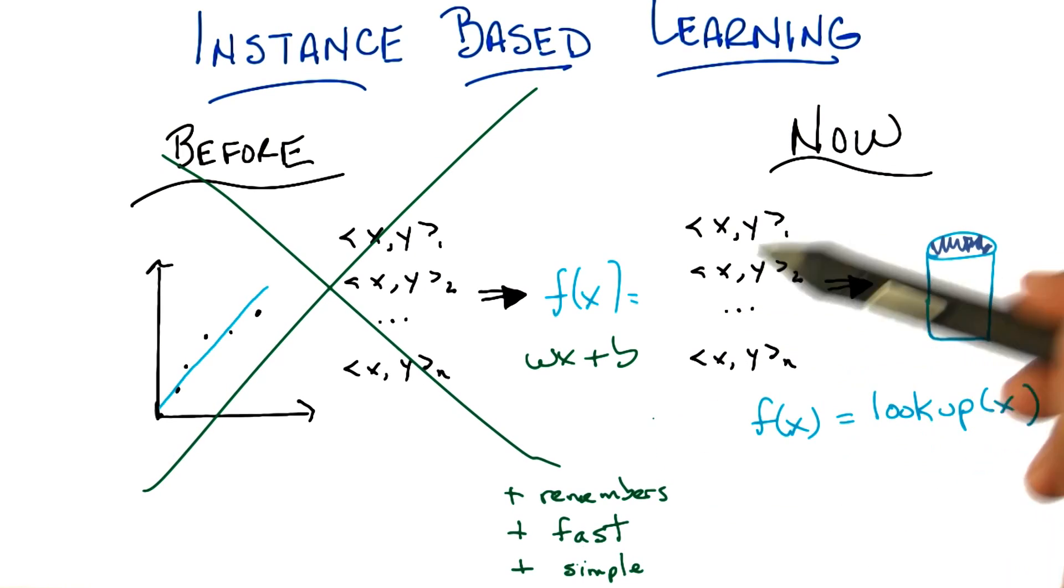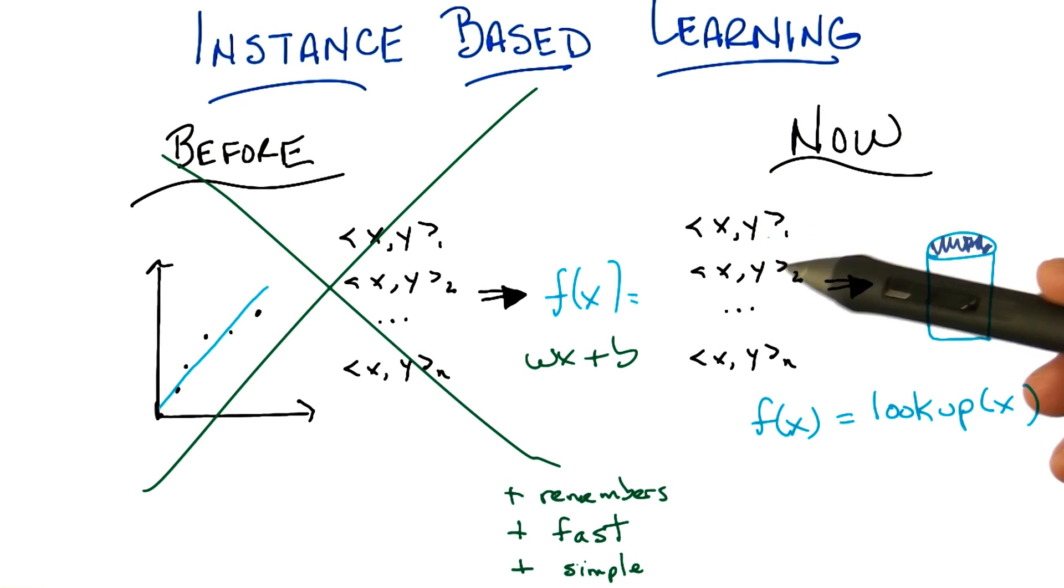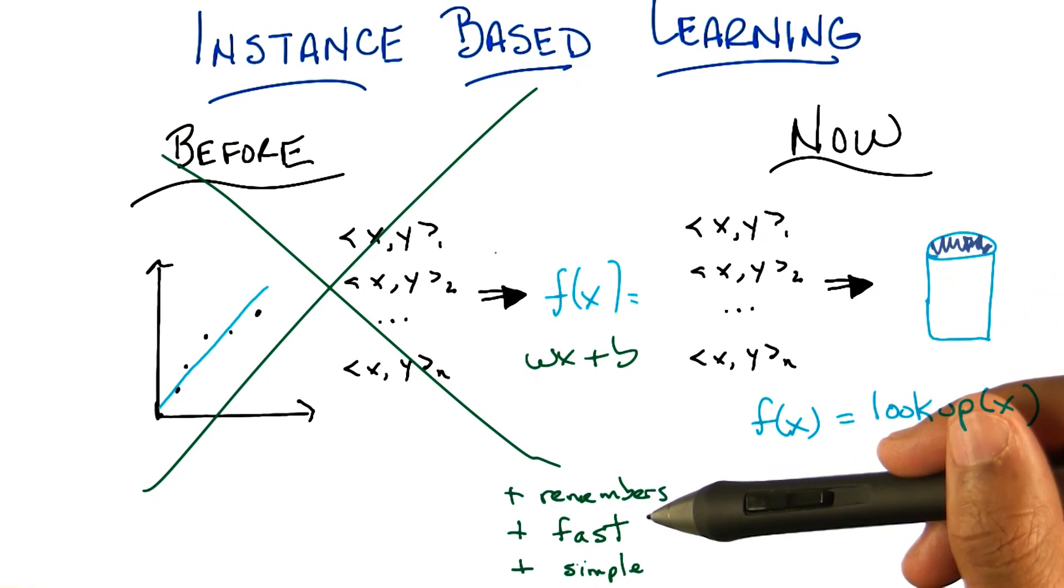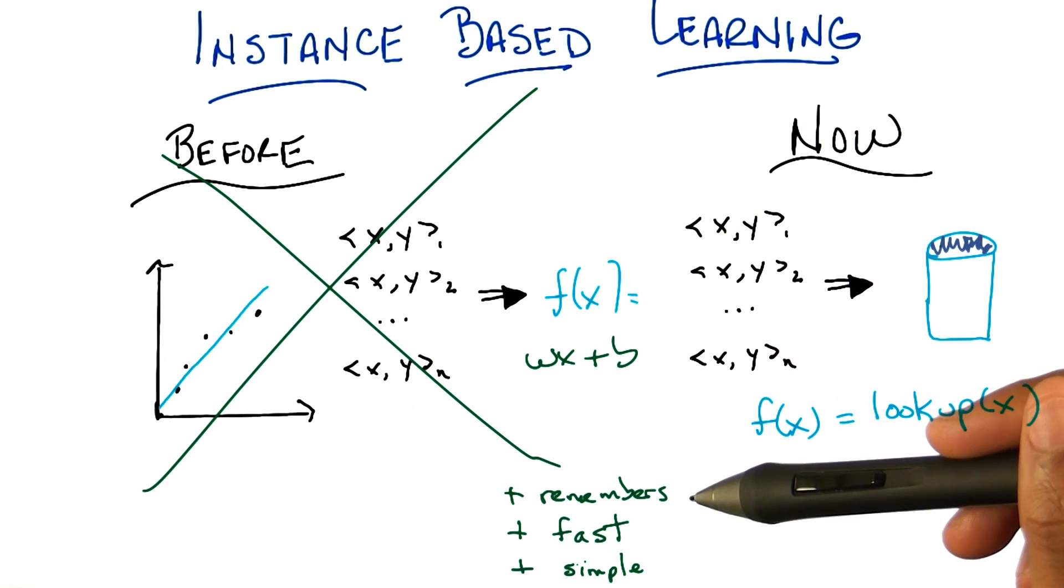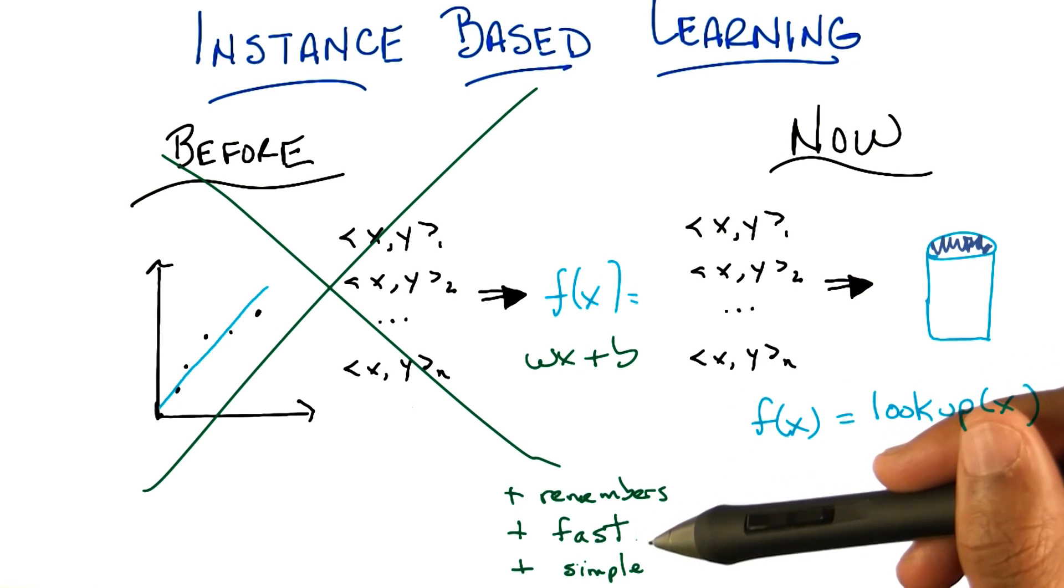Okay. So we've got three good things. It remembers stuff, so none of this little noisy throwing away information. It's very fast. You just stick it in a database using your favorite database, and looking up is going to be equally as fast. And it's very simple. There's really no interesting learning going on here. So it's the perfect algorithm and we're done.